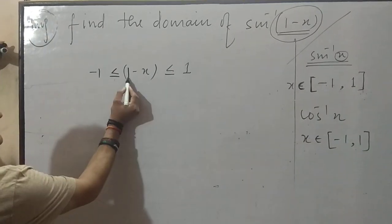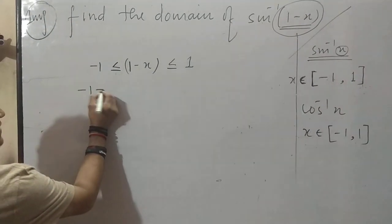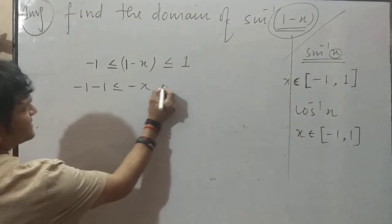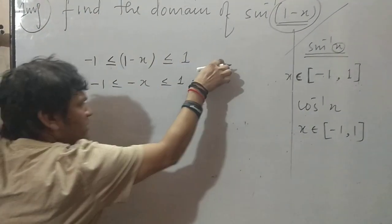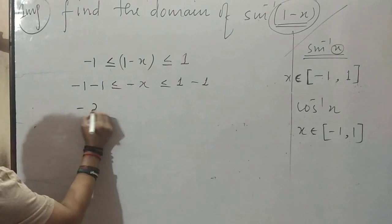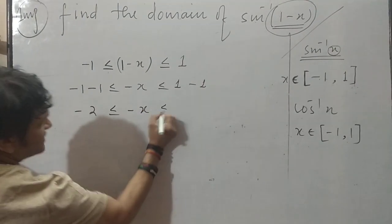Now what you will do: this one you transfer here. Minus 1 minus 1 less equal to minus x, 1 minus 1, then 1 you will transfer here, it will go there also. Now see: minus 2 less equal to minus x less equal to 0.